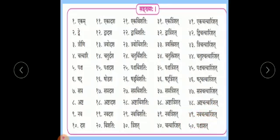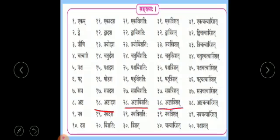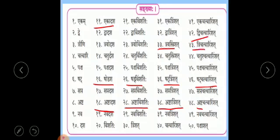Now I will tell you the differences between these. Look: ashtadasha, ashta vimshatih, ashtachatvarimsat - ashta remains the same. Then shodasha, shadavimshatih, shat chatvarimsat - note the changes. Ekadasha, ekavimshatih, ekatrimshat, ekachatvarimsat. For dva: dva, dva, dva, dvi. For trayo: trayo, trayo, trayo, trayo - same. For chatur: chatur, chatur, chatush, chatush - these are important. Pancha and sapta remain the same. Navar is also same. The endings that are different: vimshatih, trimshat, chatvarimsat, and panchasat.